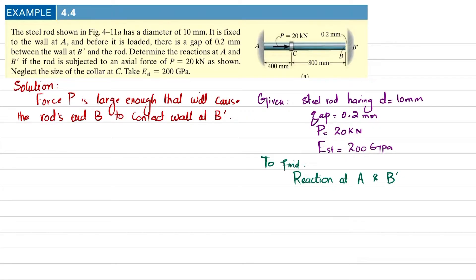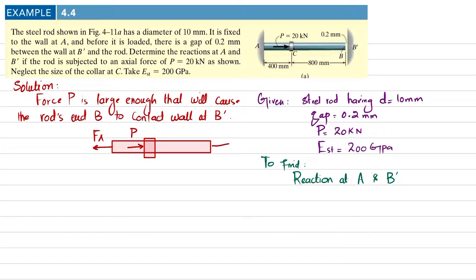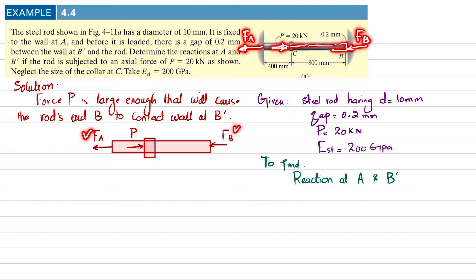We will draw the free body diagram. The rod and collar are shown. Let the force at point A be FA acting in one direction, P acting in another direction, and the force at B dash be FB. Due to this load the rod will elongate and touch the wall, so the wall will exert a reaction force FB in the opposing direction. Since P causes elongation, the wall reaction FA acts in the opposite direction. We need to find both FA and FB.